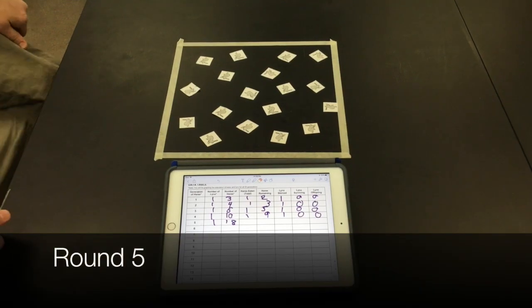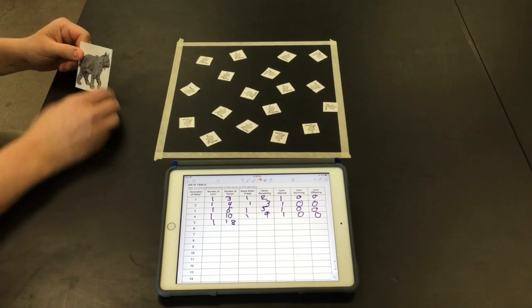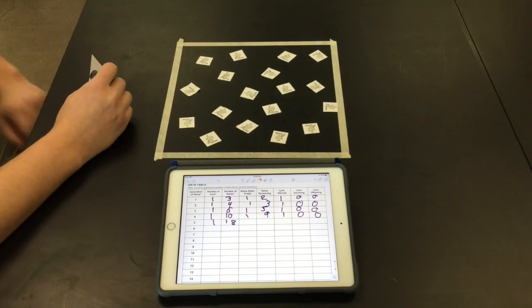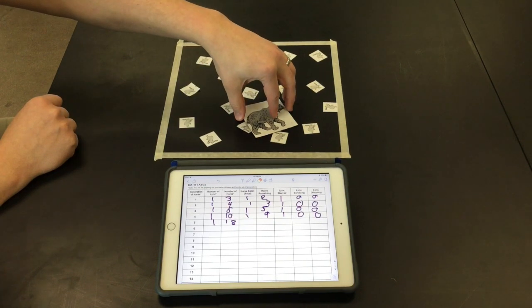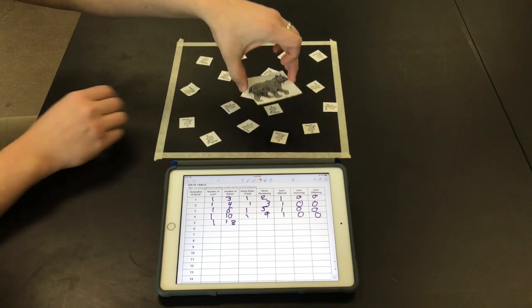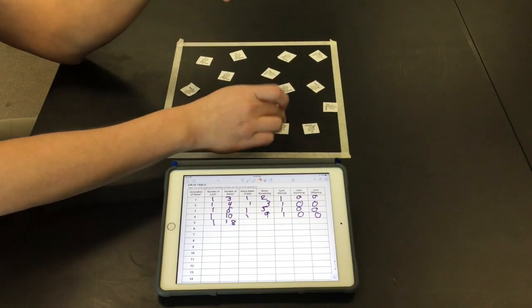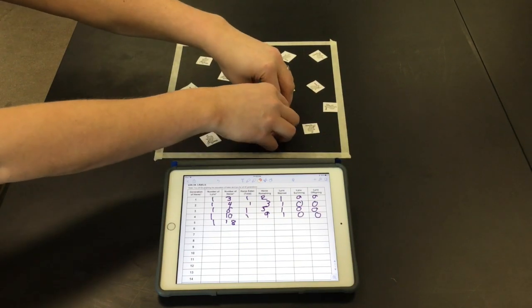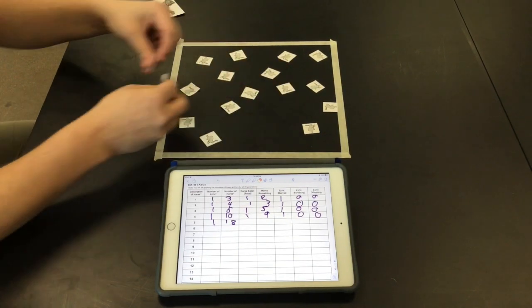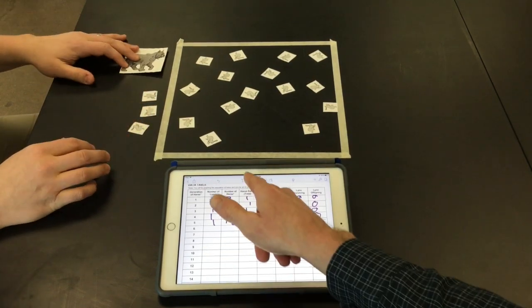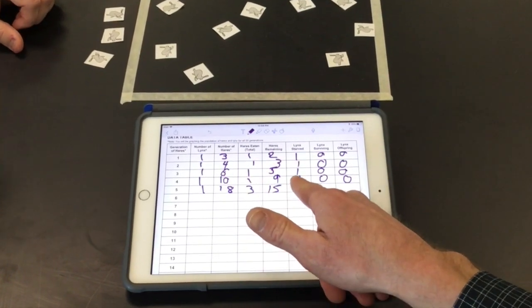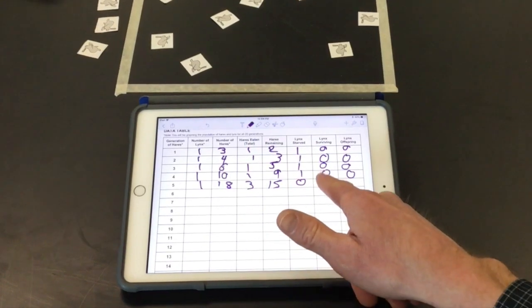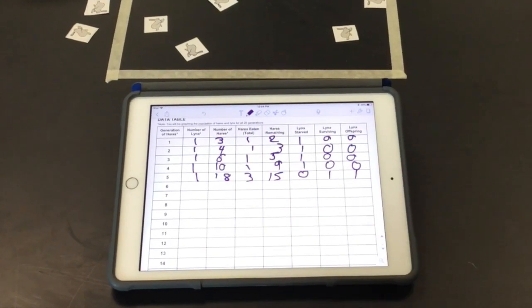Okay, so here we are on round five where we have one lynx again still but 18 hairs. And so we'll see if the lynx will survive this time. So you can see this lynx captured or touching these three hairs. It doesn't have to be fully over the top, just barely touching. So this one, the lynx successfully survived. It caught three hairs. All right. So hairs eaten three, hairs remaining 15. Lynx surviving one. This time there will be a lynx offspring because one survived.